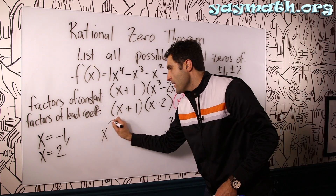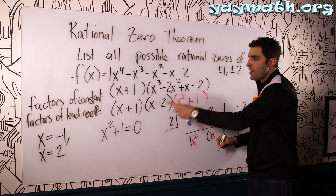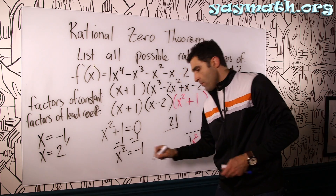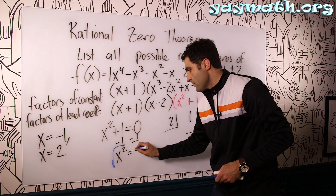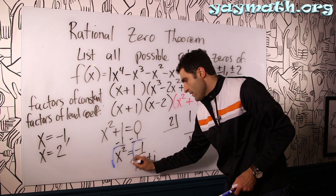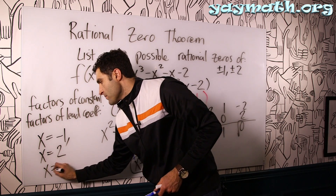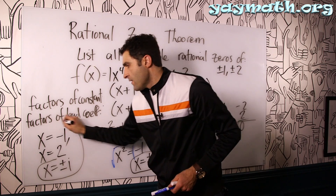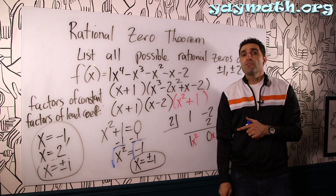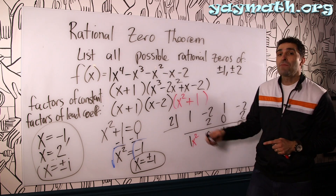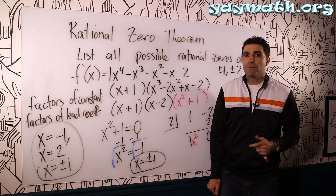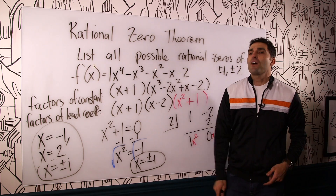Here we have x squared plus one equals zero. Subtract one from both sides to get x squared equals negative one, then take the square root of both sides, and we get x equals plus or minus i. There are all four solutions, using the Rational Zero Theorem to guide us. In part two of this video coming right up, I'm going to solve an even more difficult one — same process, but more complex and more involved for the harder problems you'll be facing. Thanks so much for watching. I hope this helped. Bye.